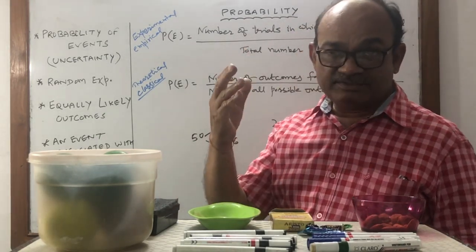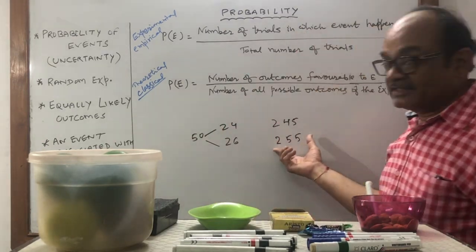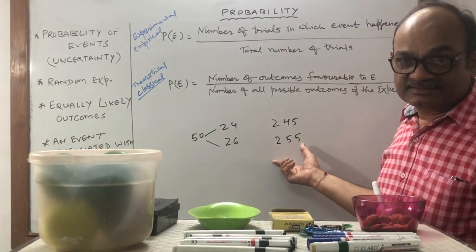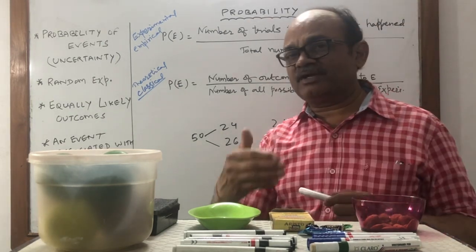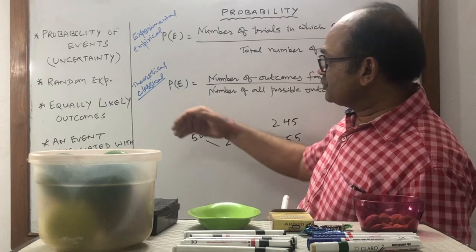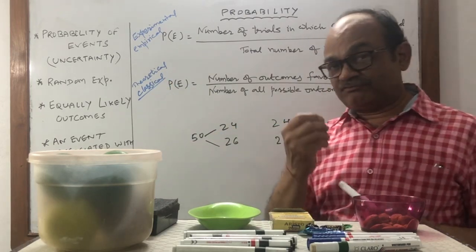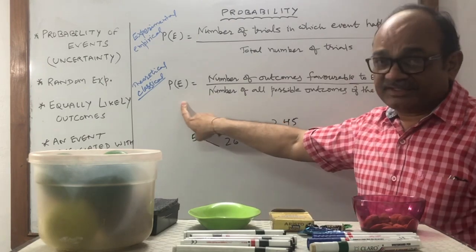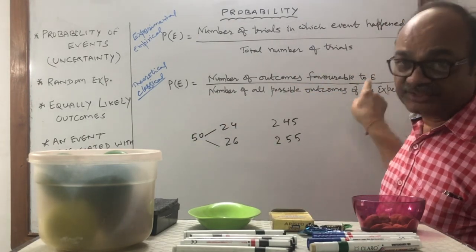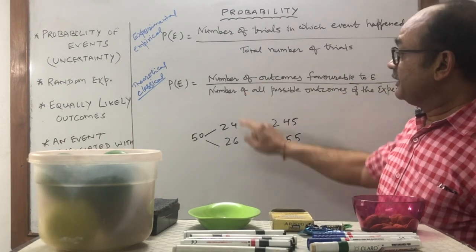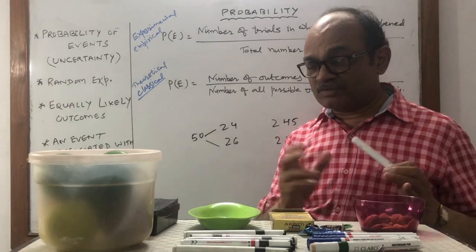You do a 500-times experiment and realize the number of heads and tails. Here in Class 10 it is a direct formula approach — theoretical or classical probability. The formula is: probability of an event equals number of outcomes favorable to event E divided by number of all possible outcomes of the experiment.